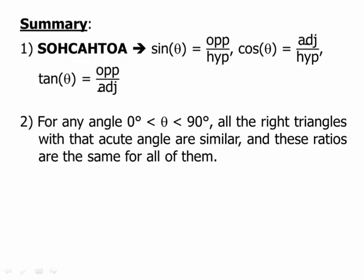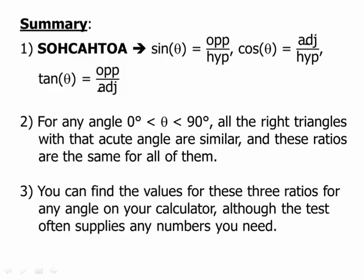For any angle greater than zero and less than 90 degrees, all the right triangles with that acute angle are similar. And so all these ratios are the same for all of them. So if you pick any angle, say 23 degrees, a 23 degree right triangle—any 23 degree right triangle is going to be similar to any other. And that's why all these ratios are the same.